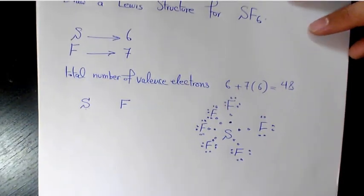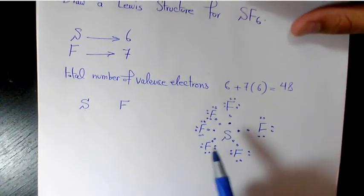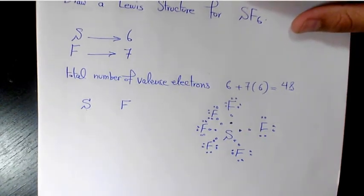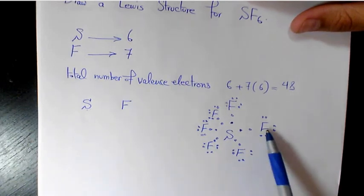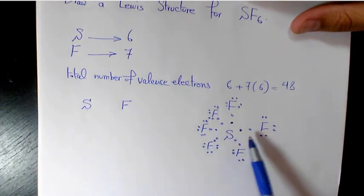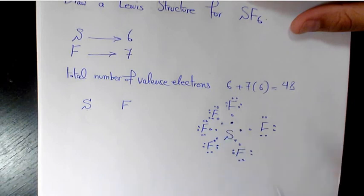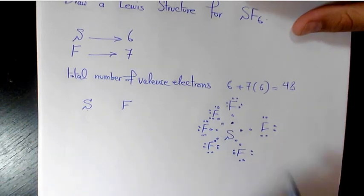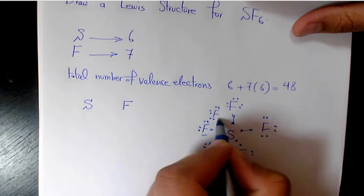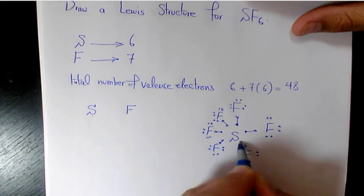Now let's count all the used electrons in order to find out the total remaining electrons. So we have 7 times 6, that's 42, and we have 6 in here, so we have no more available electrons. So we make bonds between sulfur and fluorine.